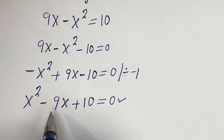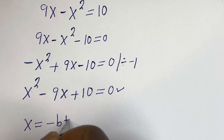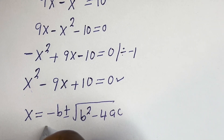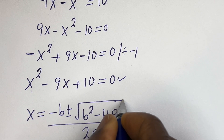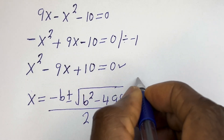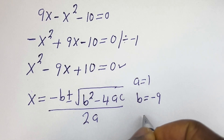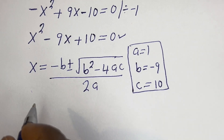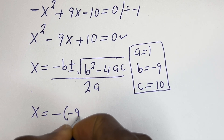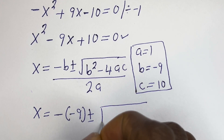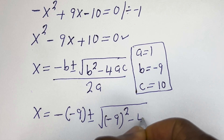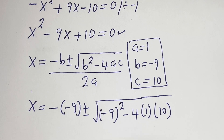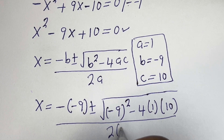Let's solve this using the quadratic general formula: x is equal to minus b plus or minus square root of b squared minus 4ac, all over 2a. From this equation, a is equal to 1, b is equal to minus 9, and c is equal to 10. So x equals minus bracket minus 9, plus or minus square root of minus 9 squared minus 4 times 1 times 10, all divided by 2 times 1.